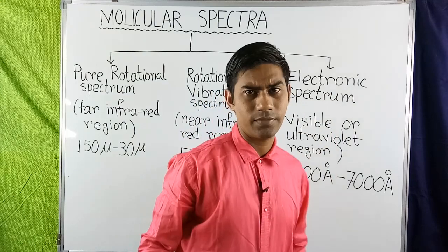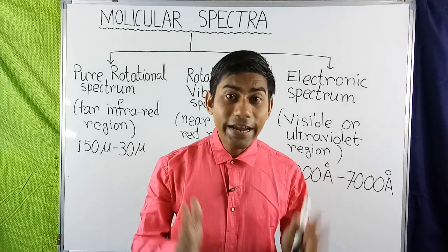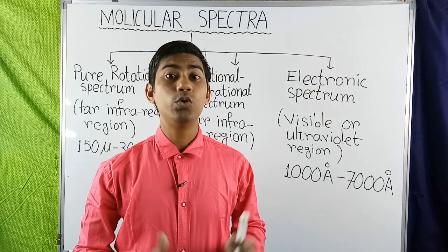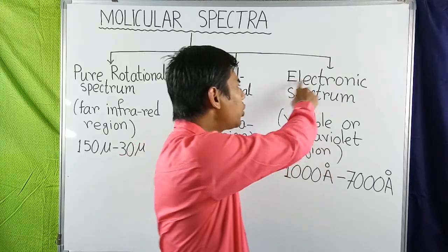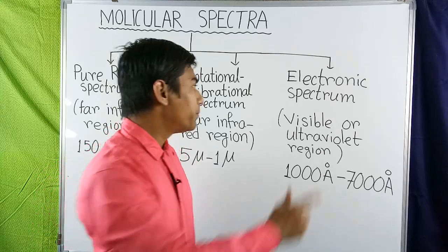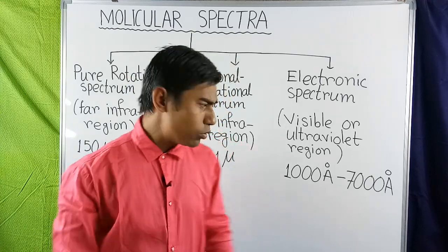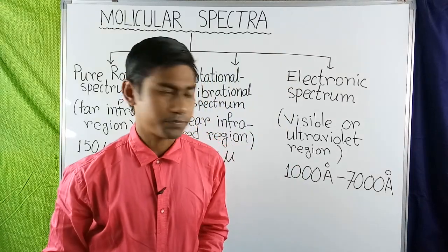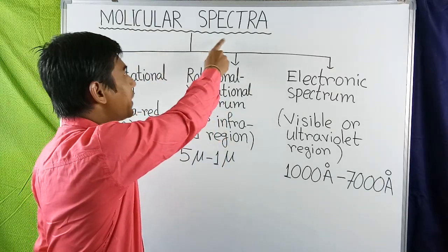The electronic spectrum arises from transitions between two electronic energy states of an atom in a molecule with the emission or absorption of a photon. The electronic spectrum lies in the visible or ultraviolet region, with a wavelength range of about 1000 Angstroms to 7000 Angstroms. Now we will discuss the origin of molecular spectra, or band spectra — that is, why molecules show band spectrum.